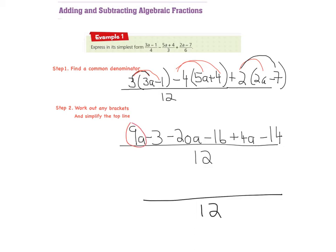So 9a plus 4a gives me 13a. And 13a minus 20a gives me minus 7a. And now I just need to focus on my numbers. So minus 3, minus 16, gives me minus 19. And minus 19, minus 14, gives me minus 33. And I just checked that on my calculator. Okay, so can we break this down any further? We actually can't. We've simplified it as much as we can. So when I expressed all of this, the answer in its simplest form is minus 7a, minus 33, all over 12.